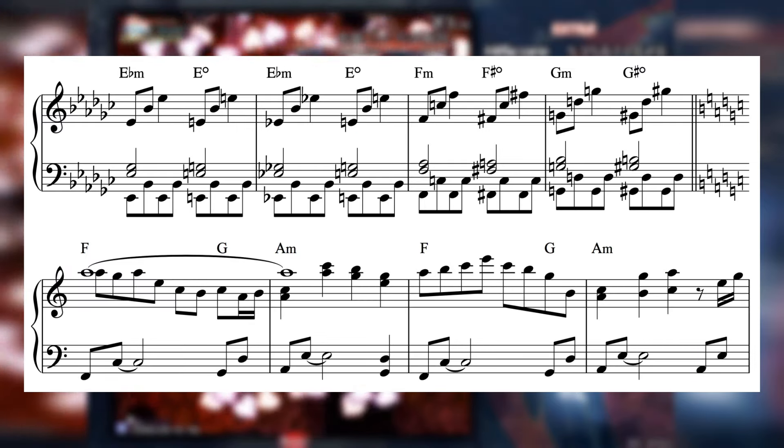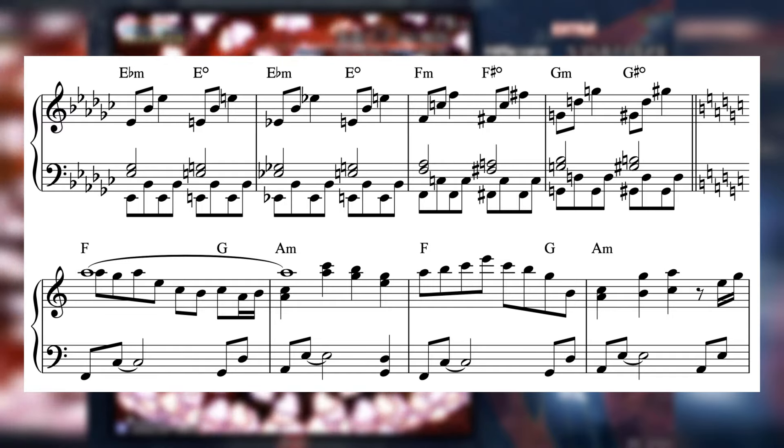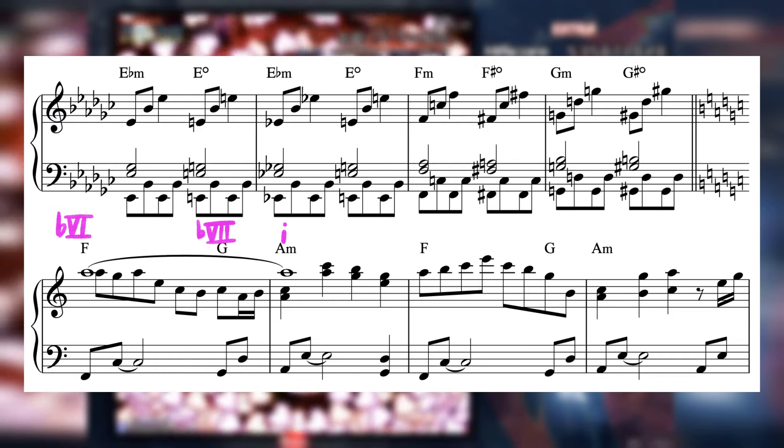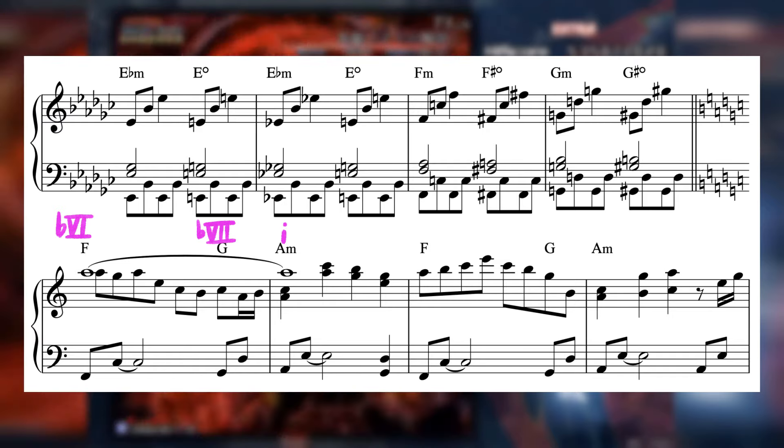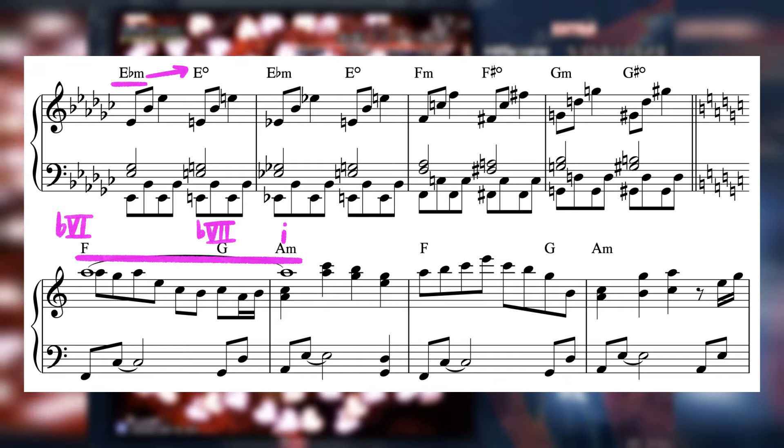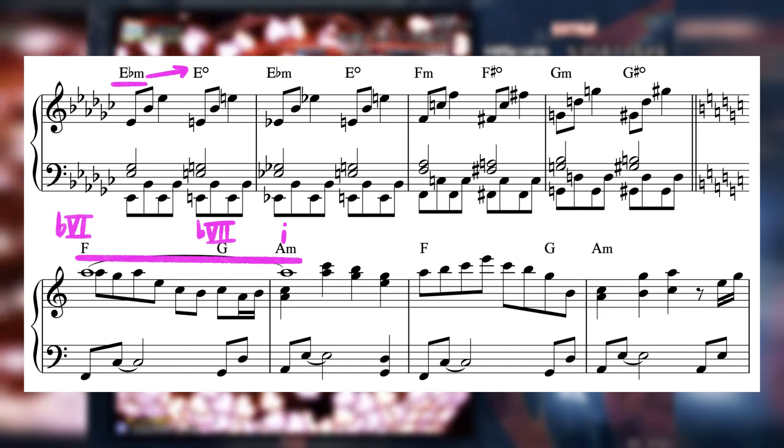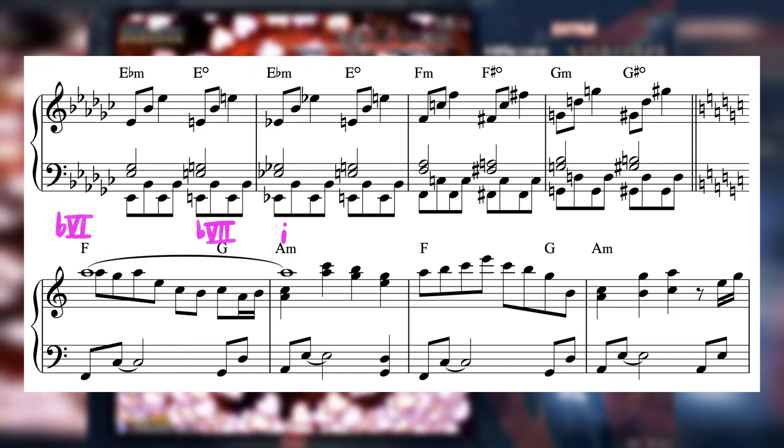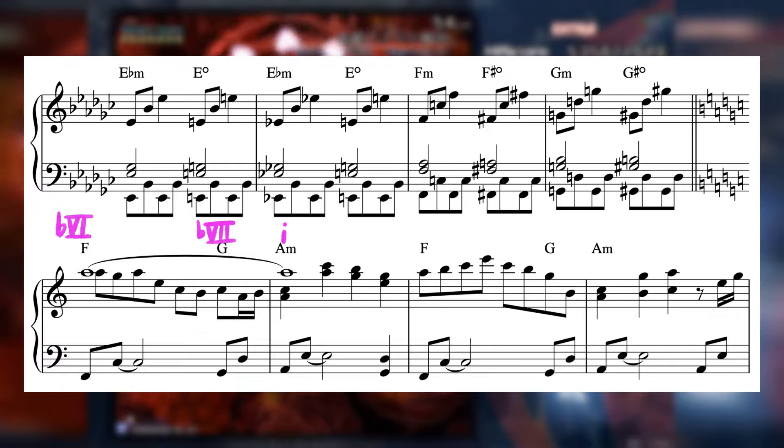Even though we're in the key of A minor, our resolution to the actual A minor chord is delayed by a bar as we instead land on the b6 chord of the key, F, and walk up diatonically to A minor. Not only is this the reverse approach from the previous section, which started on its minor tonic and walked up chromatically from there, this b6 b7 minor 1 progression is one that gets used all the time in toho music for more sentimental moods. This particular progression comes up so often that I'm positive it's Zune's default emotional sounding chord progression.